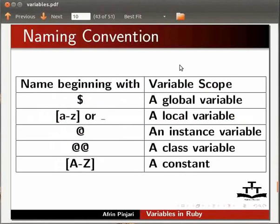Each variable type is declared by using a special character at the beginning of variable name. Dollar represents a global variable. Lowercase letters and underscore represents a local variable. At the rate represents an instance variable. Two at the rate symbols represents a class variable. Uppercase letters represents a constant. We will learn in detail about this in another tutorial.